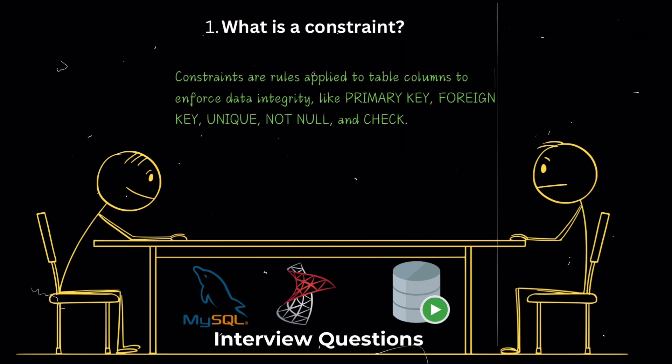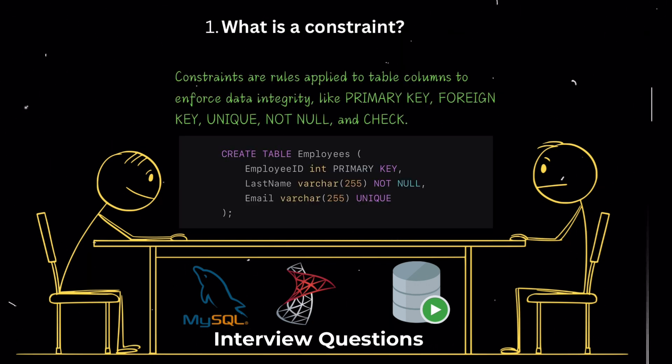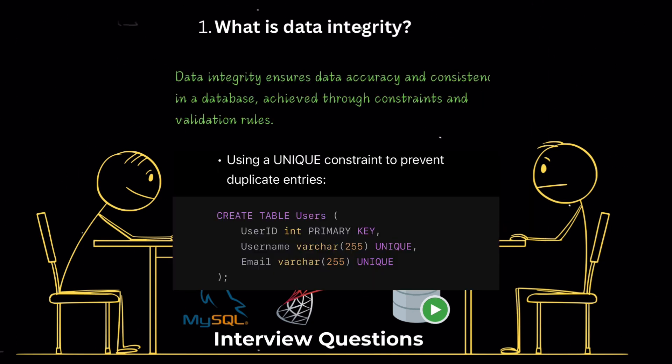What is a constraint? Constraints in SQL are rules applied to table columns to enforce data integrity. Common constraints include primary key, foreign key, unique, not null, and CHECK.